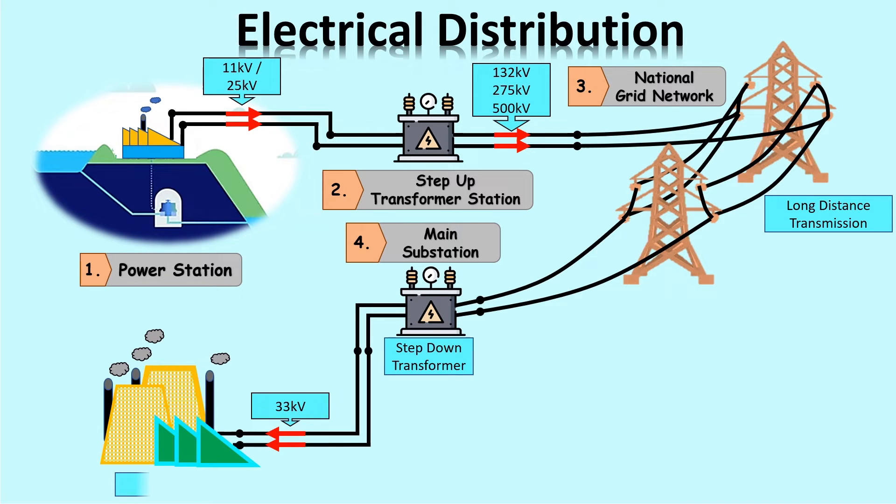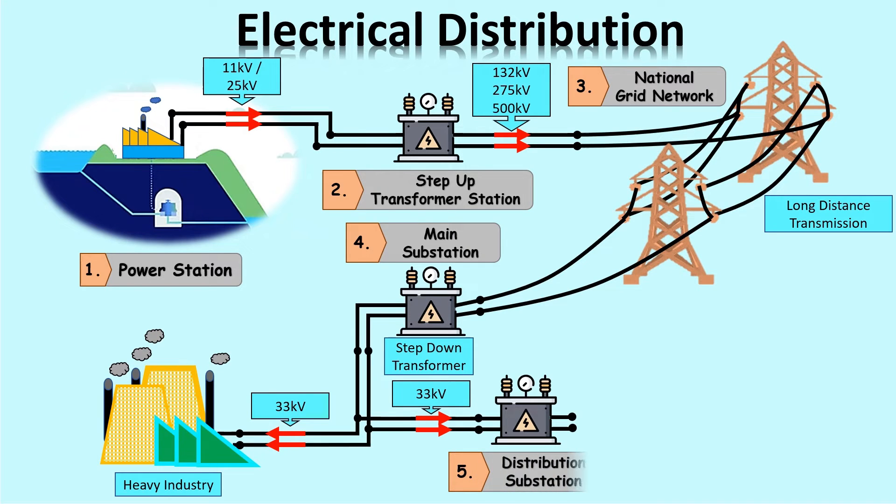This 33 kilovolt voltage will be used by heavy industry factories. This 33 kilovolt voltage also goes through other routes to be used by other users apart from heavy industry. Electricity will pass through the transformer located in the distribution station.